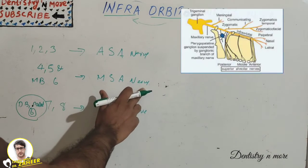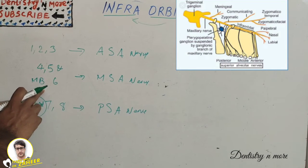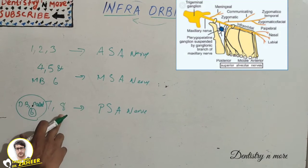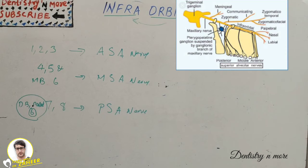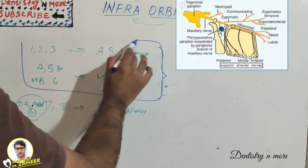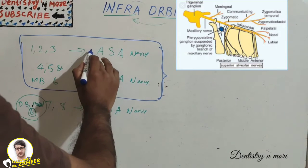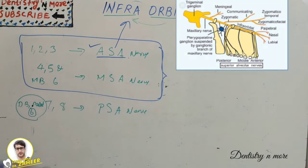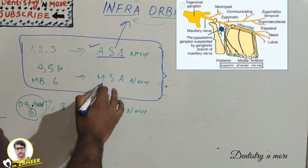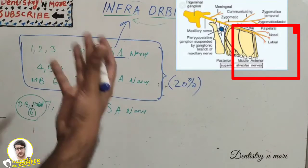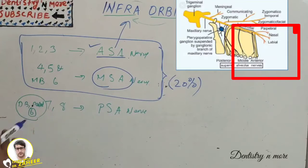The middle superior alveolar nerve supplies the two premolars and the mesiobuccal root of the first molar. The remaining teeth — second and third molar along with the distobuccal and palatal roots — are supplied by the posterior superior alveolar nerve. When we apply the local anesthetic injection, infraorbital will definitely anesthetize the anterior superior alveolar nerve and, in most cases, the middle superior alveolar nerve as well. However, in 20% of cases the middle superior alveolar nerve will not be anesthetized, and a separate injection will be needed.